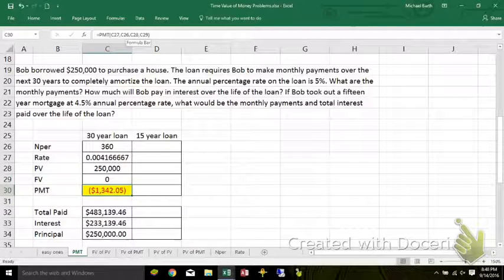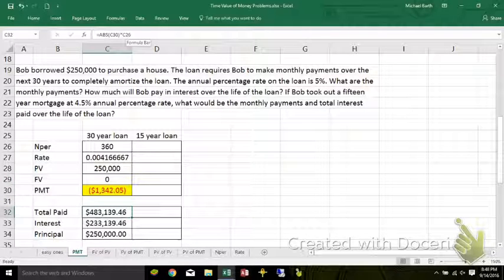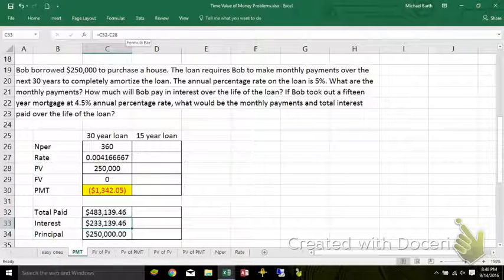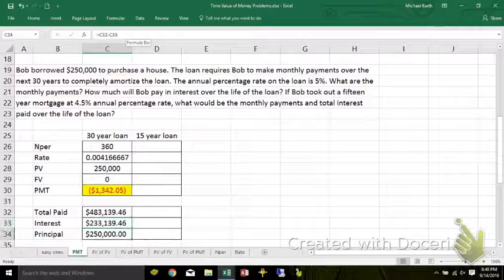So, each payment, $1,342, I'll pay $483,000, $233,000 interest, $250,000 principal.